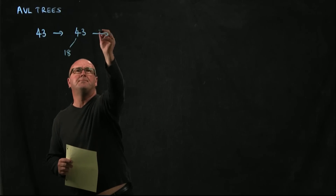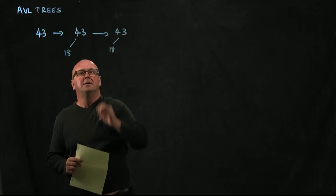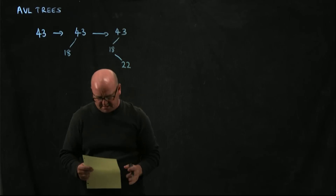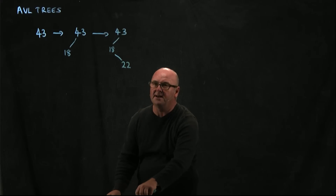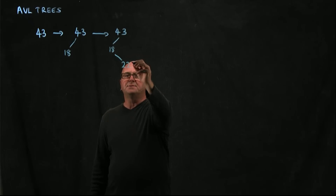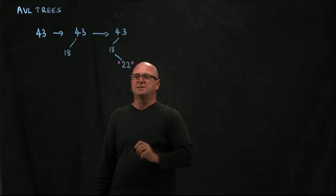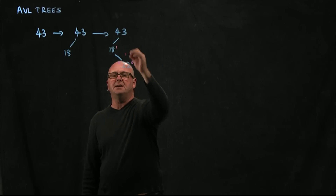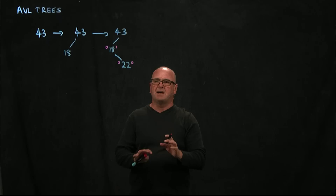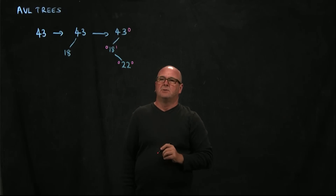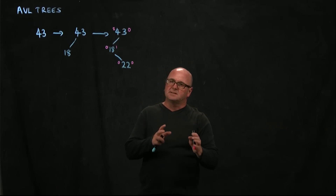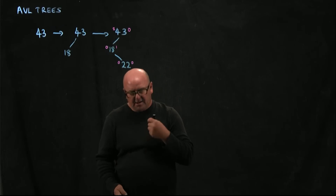Then we add 22. The 22 is smaller than 43 so it goes on the left, but it's larger than 18 so it goes on the right of 18. Now we calculate the difference in heights, starting with the node just added. On either side of 22 we have height 0. On the right of 18 we have height 1 and on the left height 0 — that's balanced. For 43, on the right we have height 0 and on the left height 2. Our left side is more than 1 above our right side, so we have to rebalance.